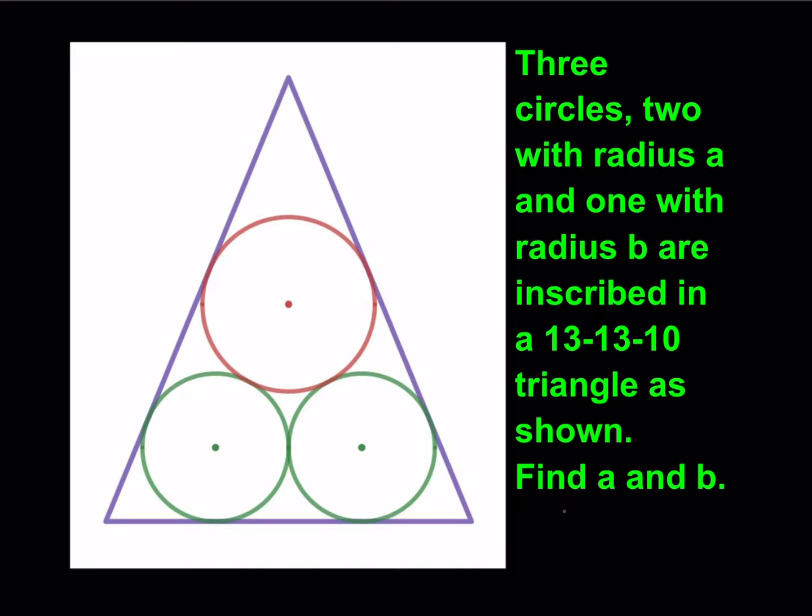Now we have three circles, two of them, the green ones have radius a, and the red one has radius b. And they're inscribed in an isosceles triangle, which has a base of 10, and the other side lengths are 13 and 13.